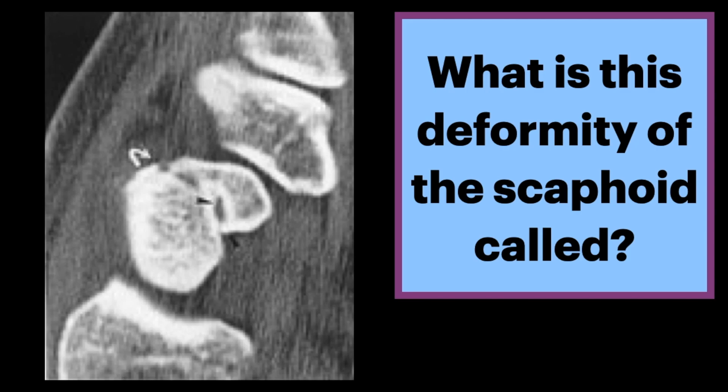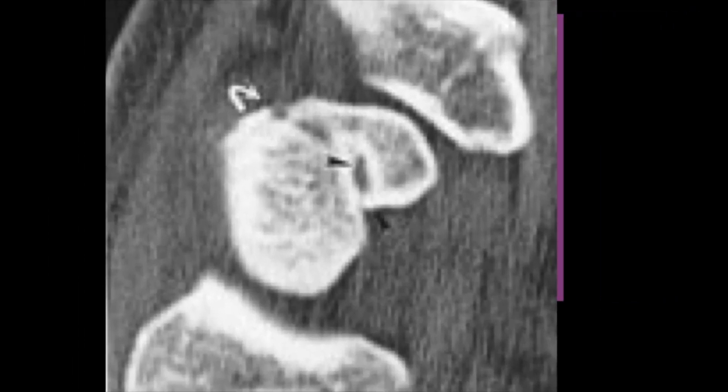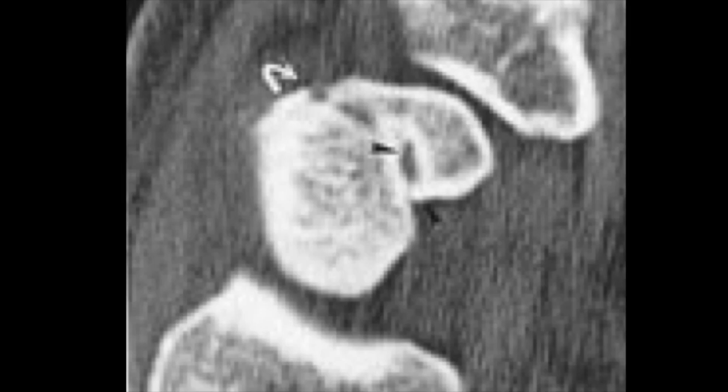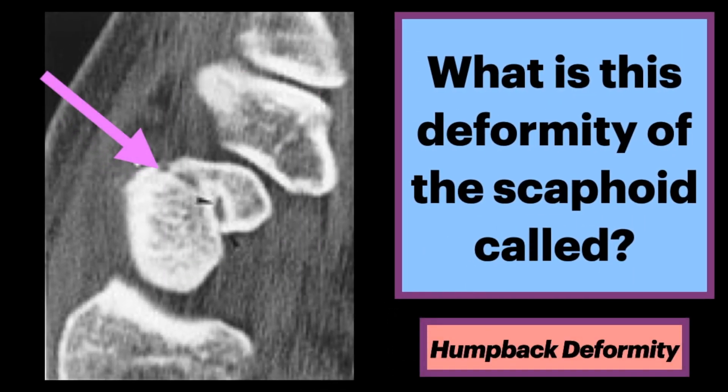What is this deformity of the scaphoid called? On this sagittal CT, note the fracture within the scaphoid waist and the folded configuration of the scaphoid. This is called a humpback deformity.